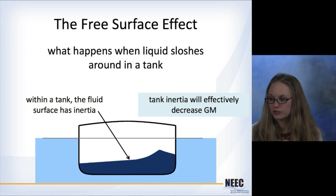So going back a couple of lectures, the free surface effect is what happens when a liquid is sloshing around inside a tank on a ship. The liquid itself has some inertia on the surface, and this tank inertia is going to effectively decrease your ship's GM.